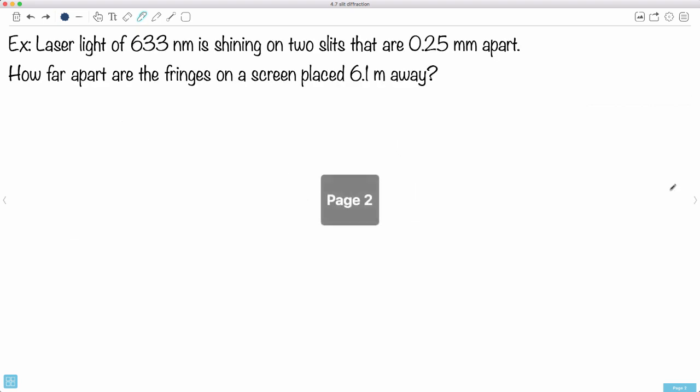Let's do an example. This is an example that looks very much like what you'd see on an exam. You have laser light of 633 nanometers shining on two slits that are 0.25 millimeters apart. How far apart are the fringes on a screen placed 6.1 meters away?